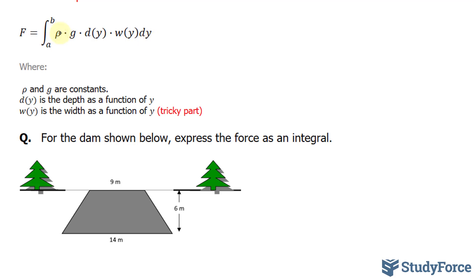We know what rho is, this Greek letter, it's 1,000. That's the density of water. G is the gravity.